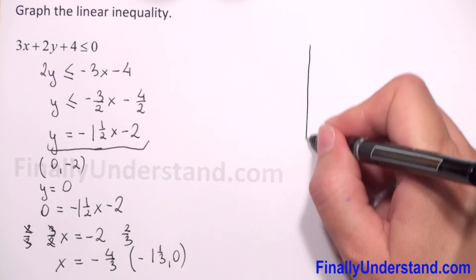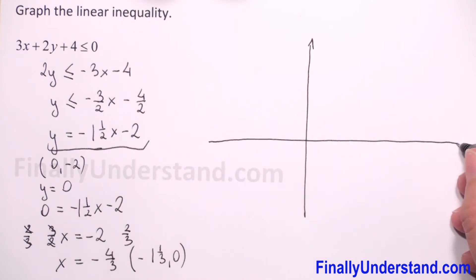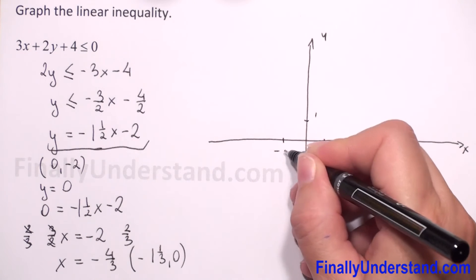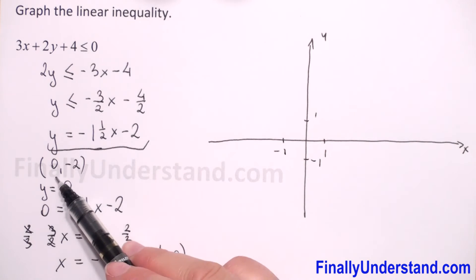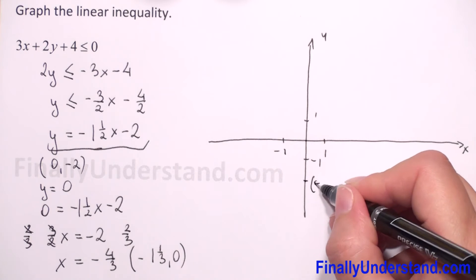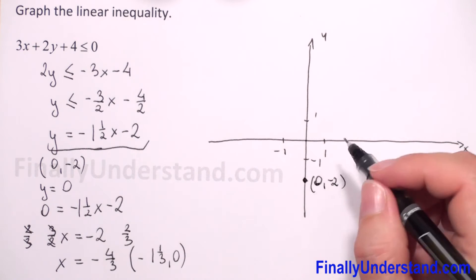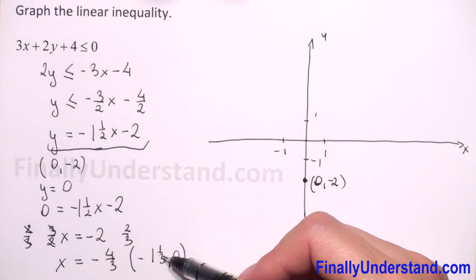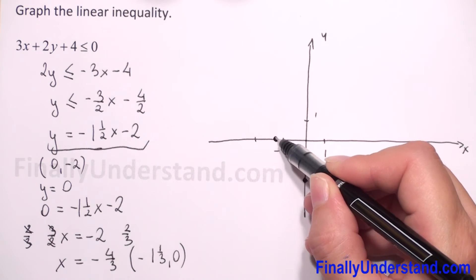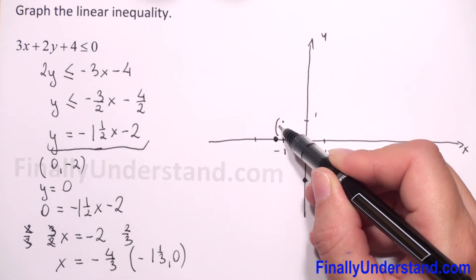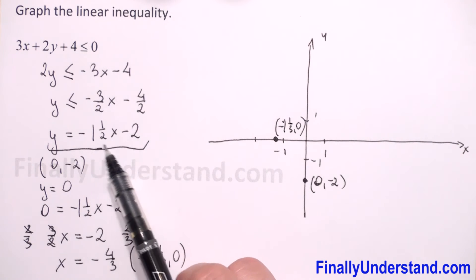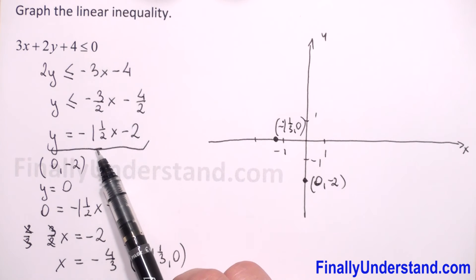Now we have to draw the x-y plane and choose the unit. The first point is (0, -2). The second point is approximately negative 1 and one third, so it is here at (-1⅓, 0). Like I said, because we have a negative coefficient before x, our line is going down.